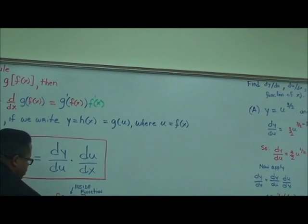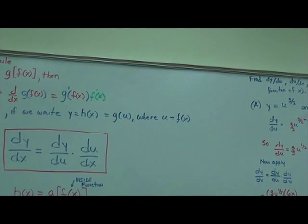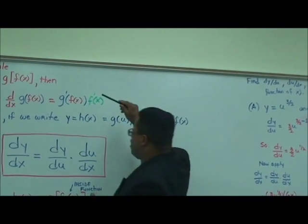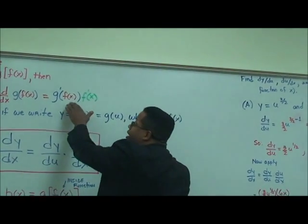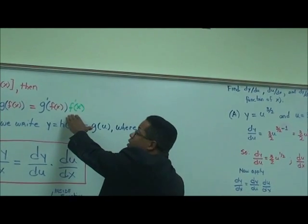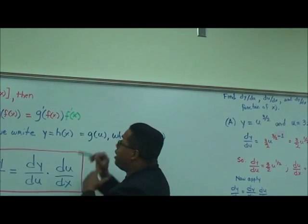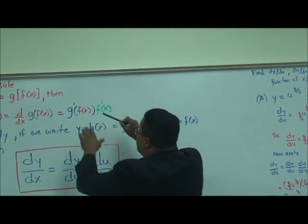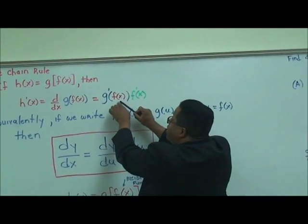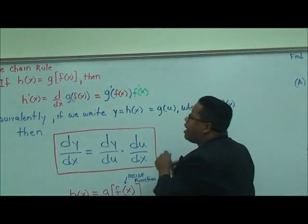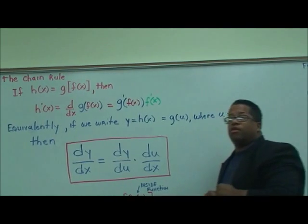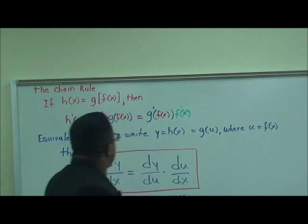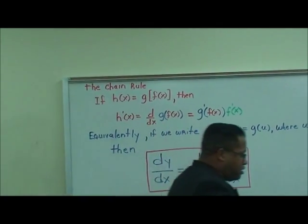Remember, this is the inside function and this is the outside function. The derivative is being taken of the outside function g of x, while the inside function f of x stands fast, and then it gets differentiated with respect to x — giving us f prime of x. So this whole thing differentiated on the outside gets multiplied by f prime of x.